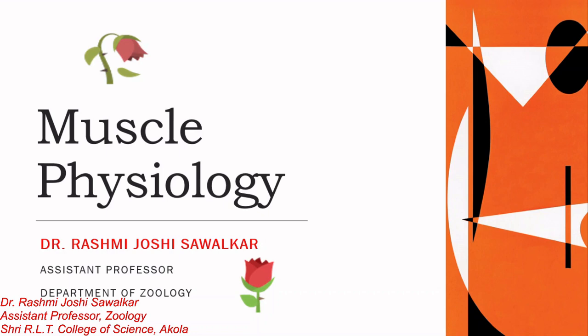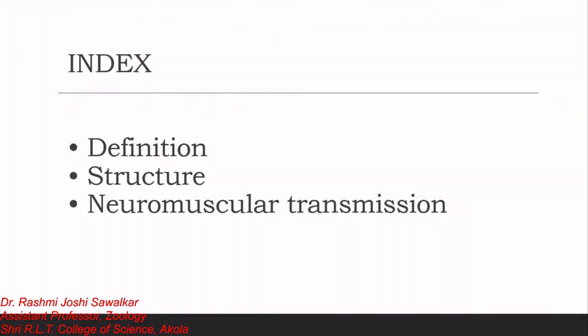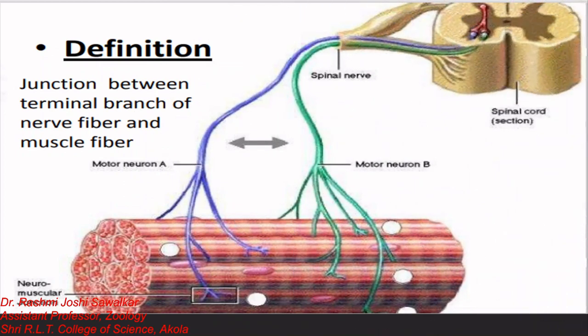Let's start about the neuromuscular junction. Today we will see the definition of neuromuscular junction, how the junction is formed, its structure, and neuromuscular transmission — how the transmission of impulse occurs. First, we will define the neuromuscular junction: it is the junction between the terminal branch of a nerve fiber and a muscle fiber.